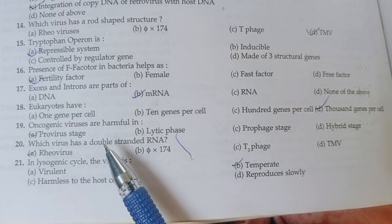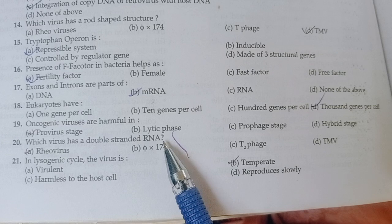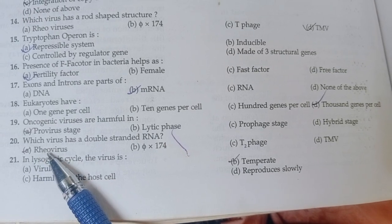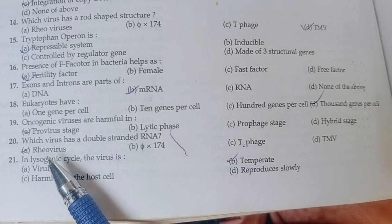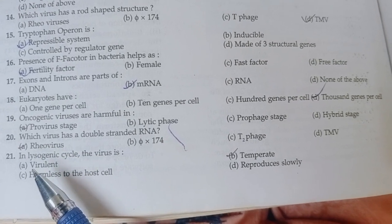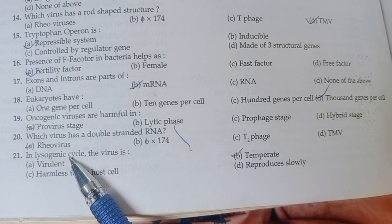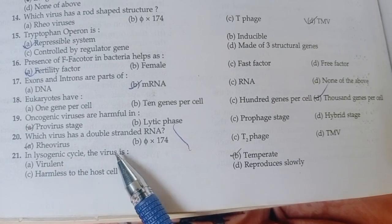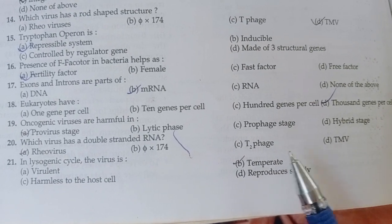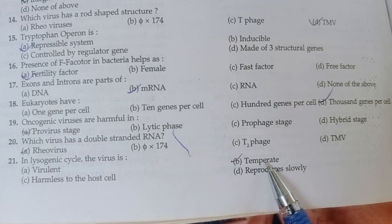Next question: Which virus has double-stranded RNA? Option A is correct, that is Reovirus. Next: In the lysogenic cycle, the virus is — option B is correct, that is a template.